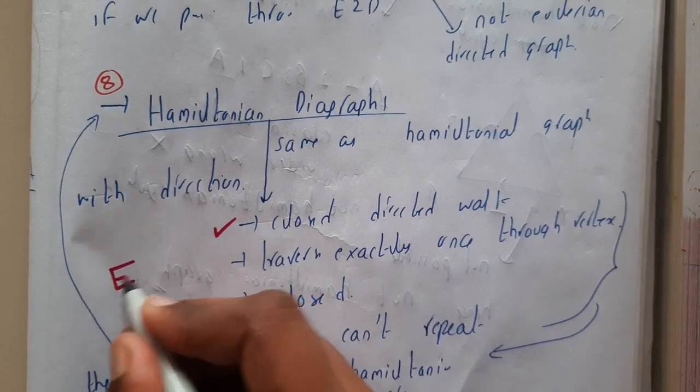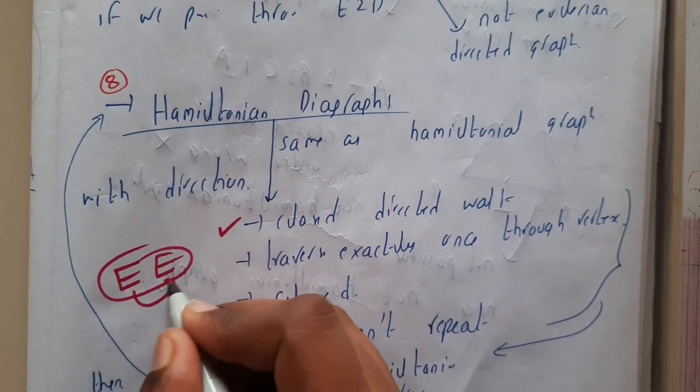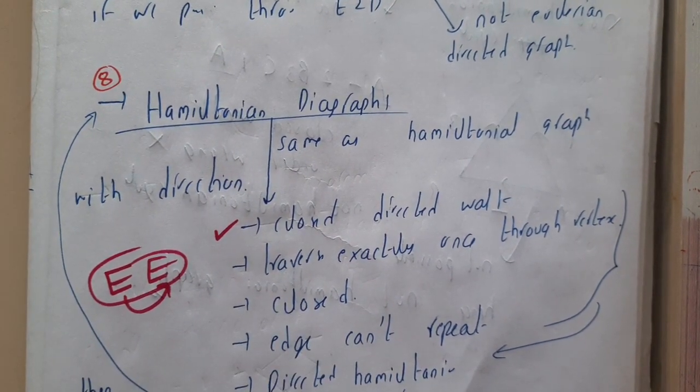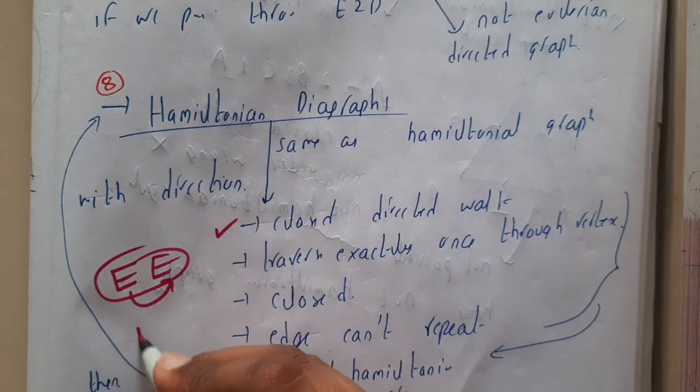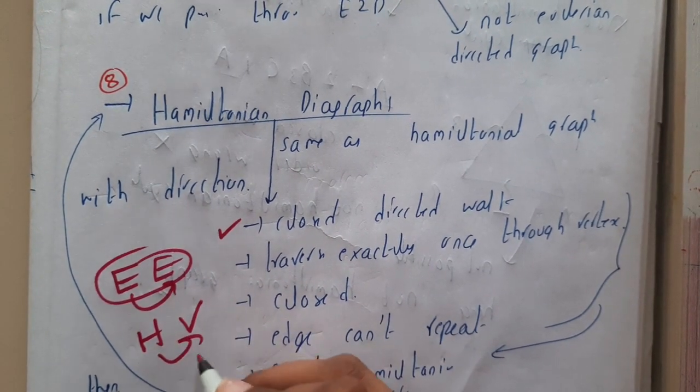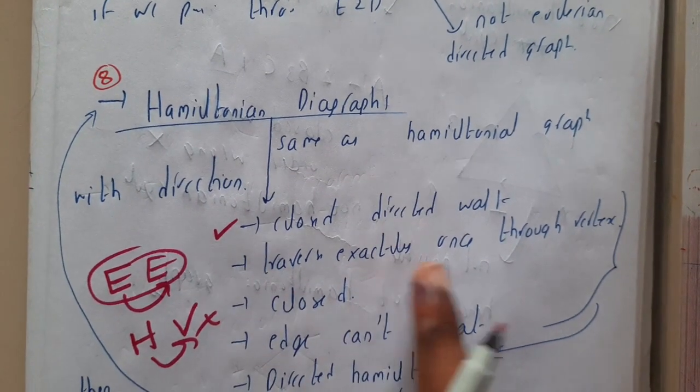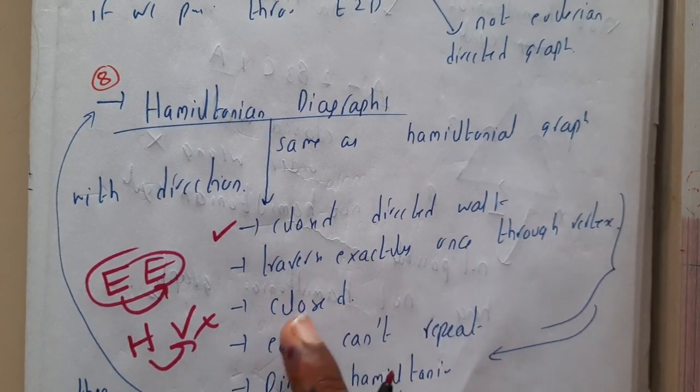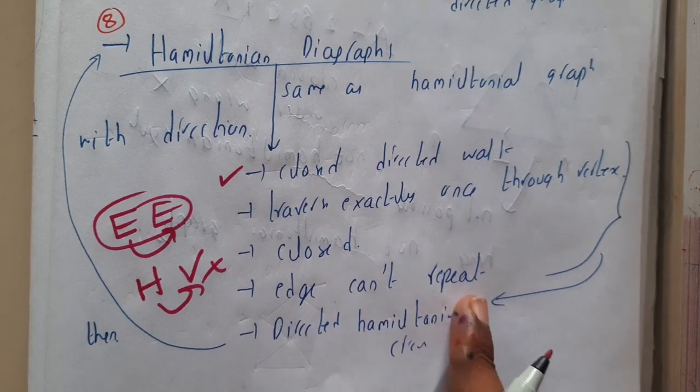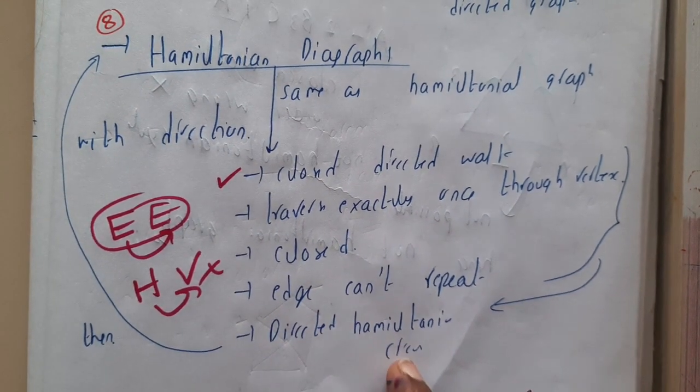If you recall Euler's example, in Euler's edges are mandatory and edges cannot be repeated. In Hamiltonian, vertices cannot repeat. Traverse exactly once through every vertex - it is closed, edges cannot be repeated.